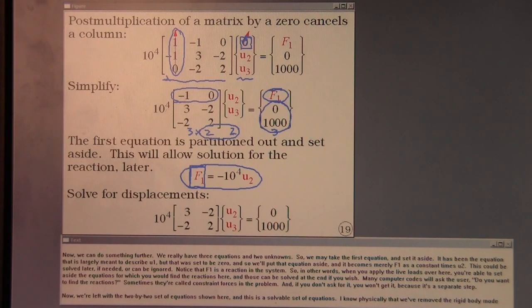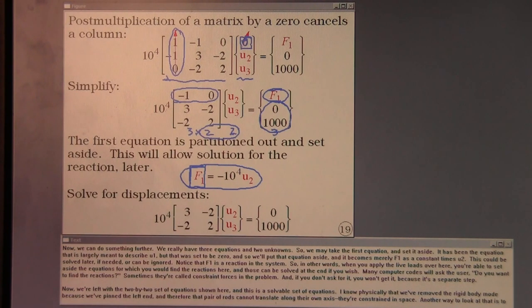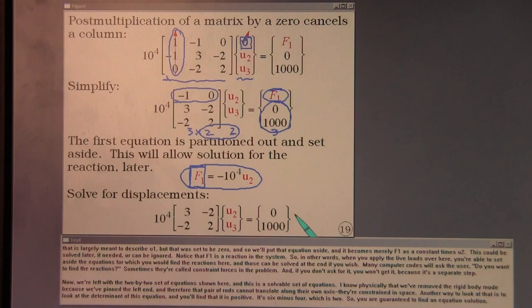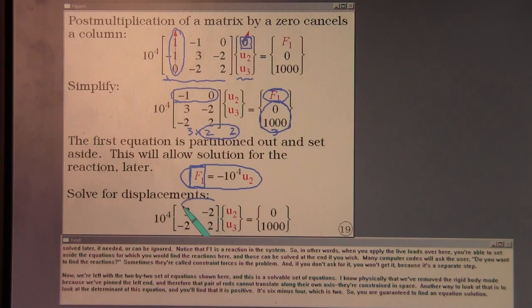Many computer codes will ask the user, do you want to find the reactions? Sometimes they're called constraint forces in the problem. And if you don't ask for it, you won't get it because it's a separate step. Now, we're left with a two-by-two set of equations shown here, and this is a solvable set of equations. I know physically that we've removed the rigid body mode because we've pinned the left end, and therefore that pair of rods cannot translate along their own axis. They're constrained in space. Another way to look at that is to look at the determinant of this equation, and you'll find that it is positive. It's six minus four, which is two. So you are guaranteed to find an equation solution.